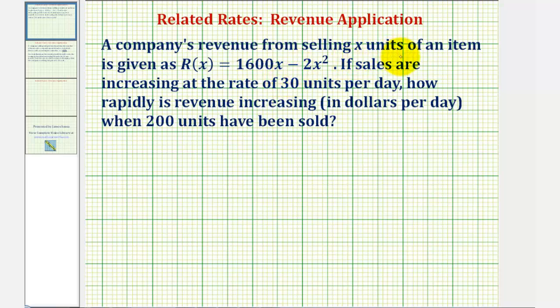A company's revenue from selling x units of an item is given by R(x). If sales are increasing at a rate of 30 units per day, how rapidly is revenue increasing in dollars per day when 200 units have been sold?